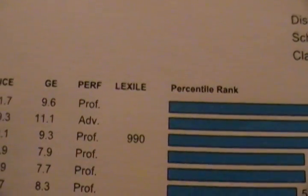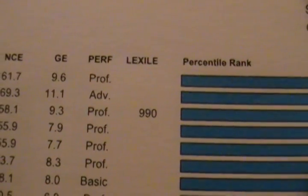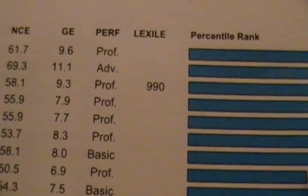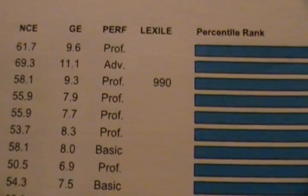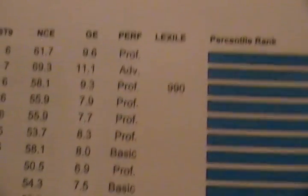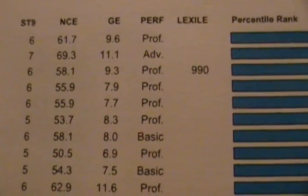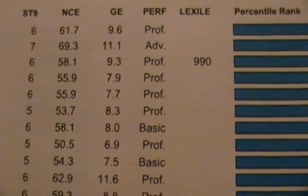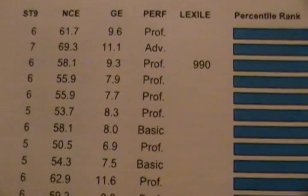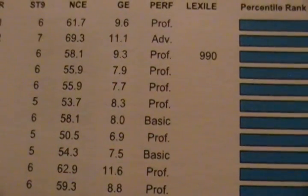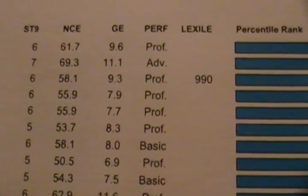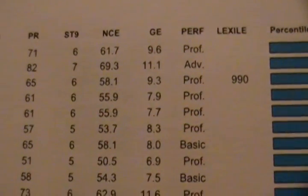The next column is PERF — performance standard. You can get below basic, which indicates less than partial mastery of the knowledge. You can get proficient, which indicates solid academic performance and readiness for the next grade level. And then you could get advanced, which indicates superior mastery beyond the grade level — the student has understood the material and is ready to move on.